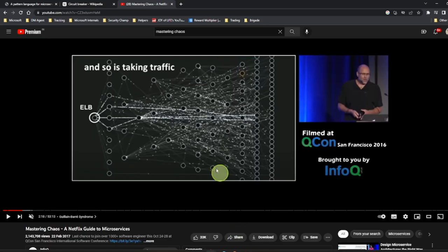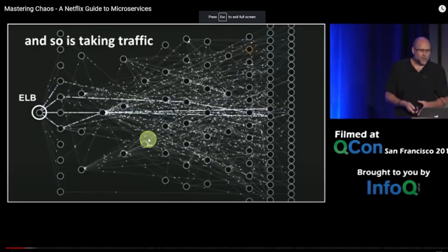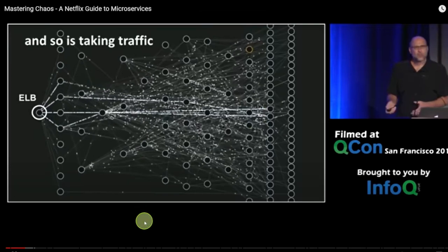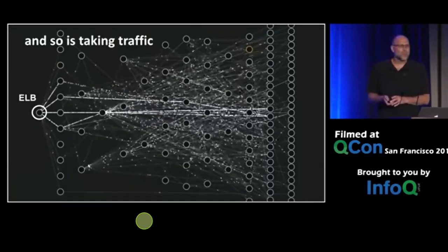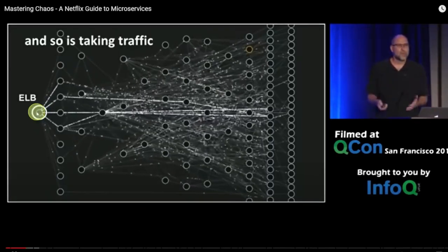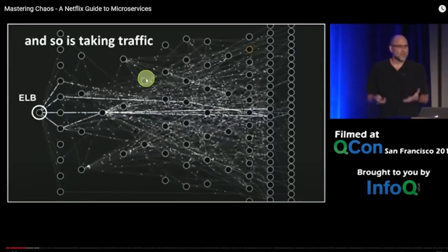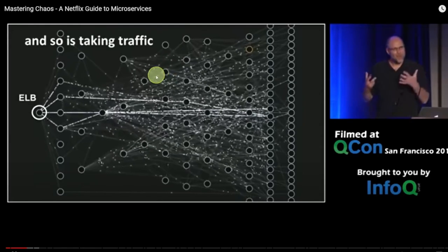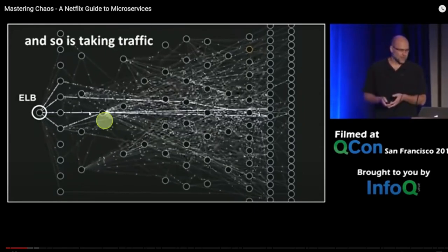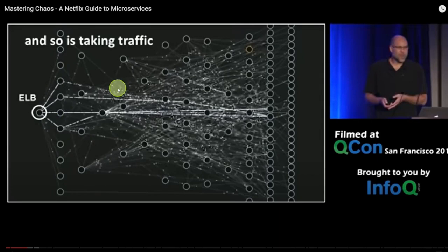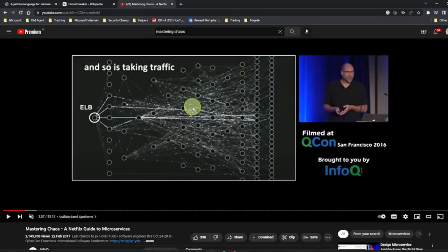To understand how complicated distributed systems work, consider Netflix. In the talk 'Mastering the Chaos: A Netflix Guide to Microservices,' you can see how network calls flow through many services via an elastic load balancer. If one service fails, the cascading effect can make everything else fail too. I highly recommend watching that video — I'll share the link in the description.